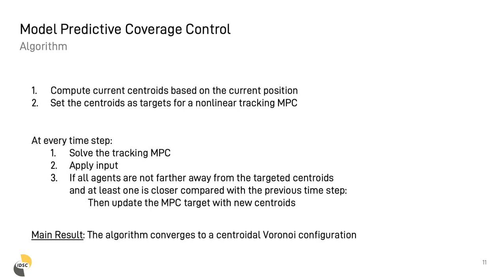The model predictive coverage control algorithm works as follows. First, given the current agent's positions, we compute the Voronoi partitions and associated centroids. We then set the centroids as the reference in the nonlinear tracking MPC controller. At this point, we enter in the main loop of the control algorithm, where, after iteration, we solve the MPC problem, we apply only the first input from the obtained input sequence, and if all agents are no farther away from the target centroids and at least one is closer, then we can update the MPC reference's targets with the new centroids.